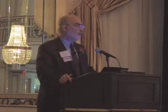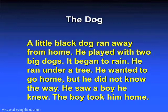Here's a second-grade story. We sometimes see kids in fourth or fifth grade to rule out a reading disability, but they can read fine — they just can't get the meaning. 'A little black dog ran away from home. He played with two big dogs. It began to rain. He ran under a tree. He wanted to go home but did not know the way. He saw a boy he knew. The boy took him home.' I'll say, 'Does this story have a happy ending or a sad ending?' — 'Well, that's not in the story, is it?' One child said 'sad because it was raining.' Read it perfectly. Doesn't get it.